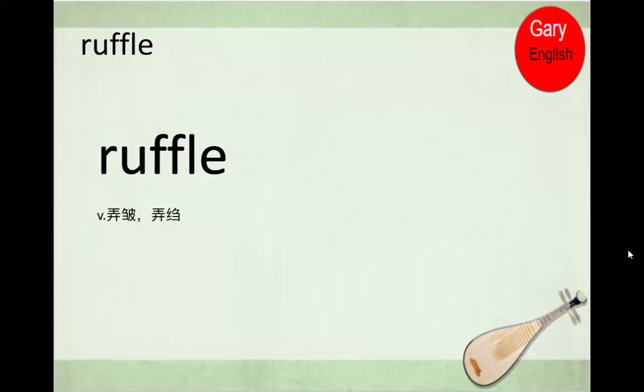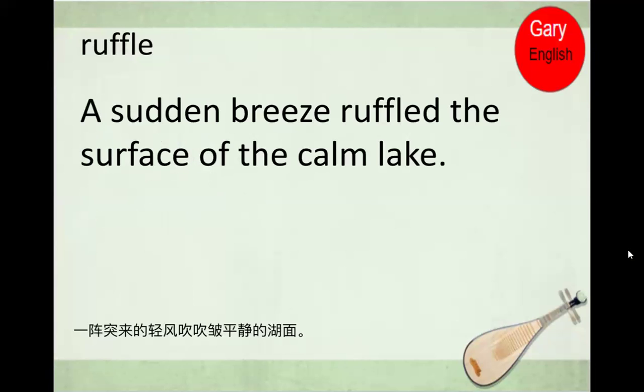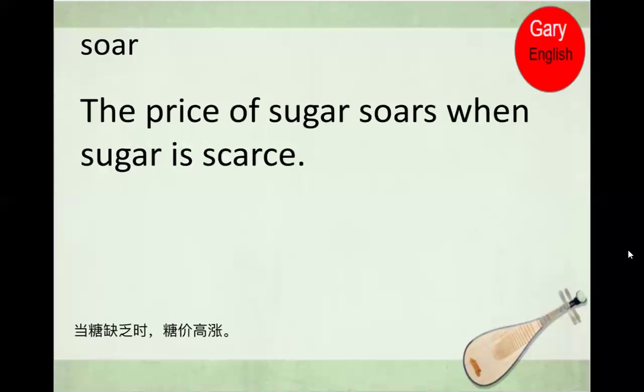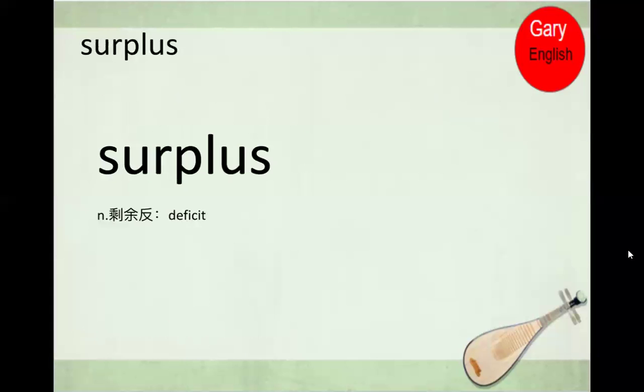Ruffle: A sudden breeze ruffled the surface of the calm lake. Soar: The price of sugar soars when sugar is scarce. Surplus: He kept enough corn to feed his cattle and sold the surplus.